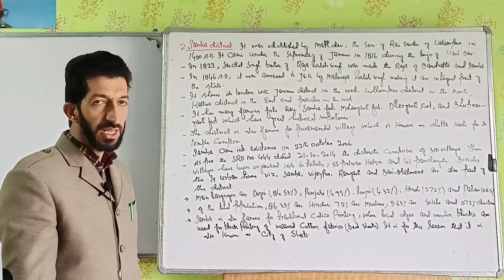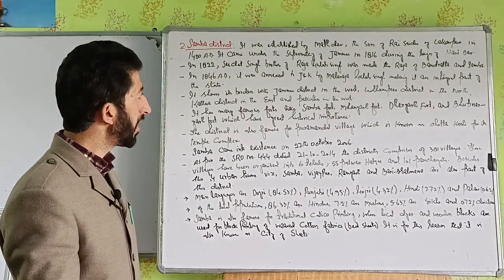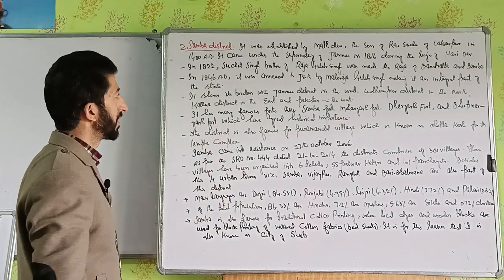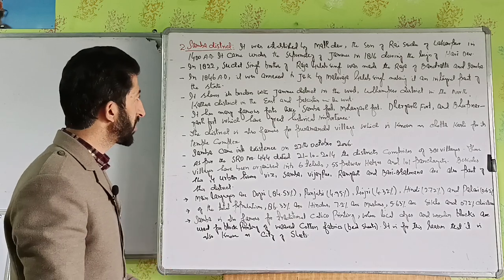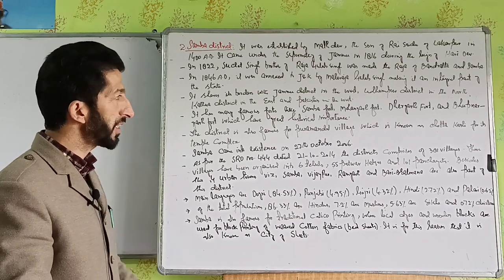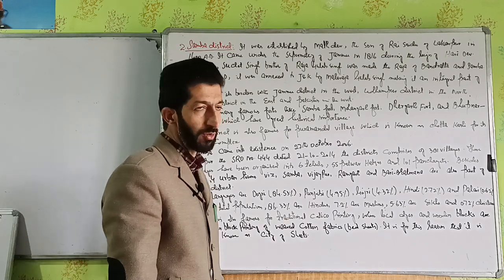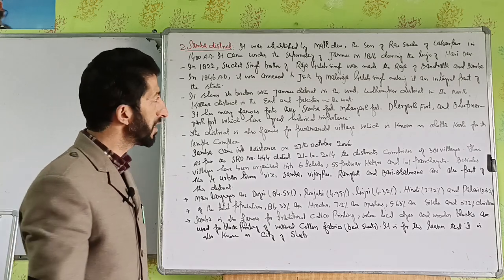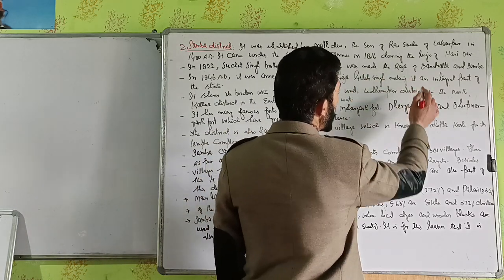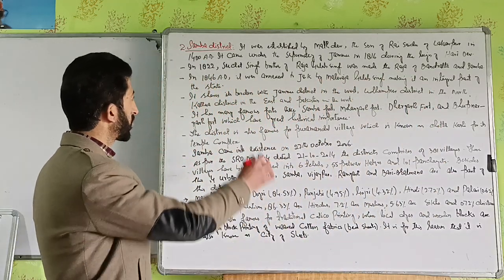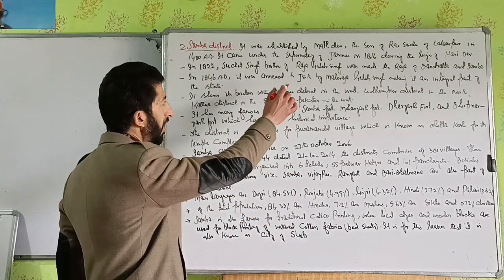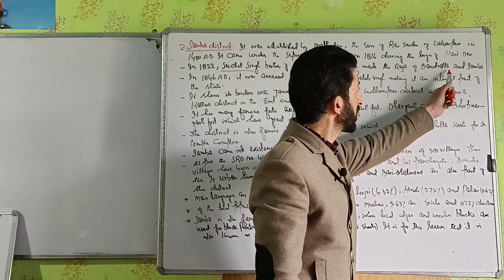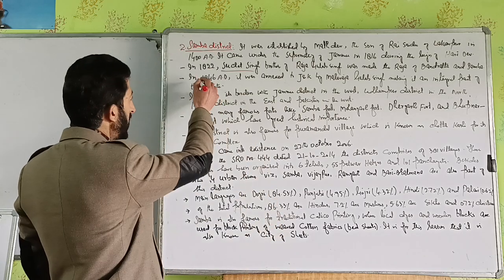Next district in Jammu region is Samba. District Samba was established by Maldev, son of Rai Sidh of Lakhanpur, in 1480. In 1822, Suchet Singh, brother of Raja Gulab Singh, was made the Raja of Bandralta and Samba.